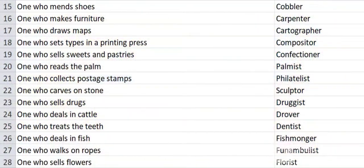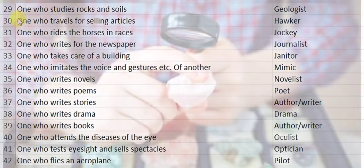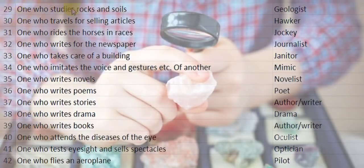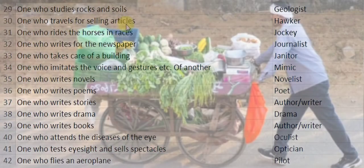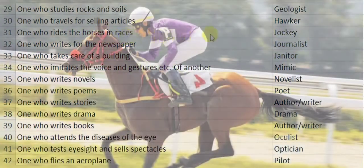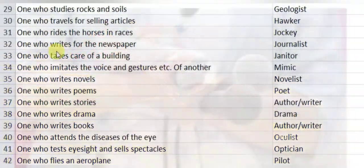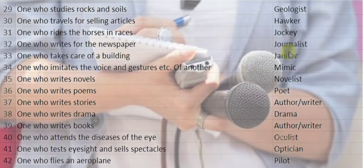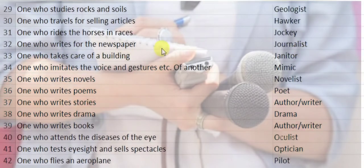One who sells flowers is a florist. One who studies rocks and soils is a geologist. One who travels for selling articles is a hawker. One who rides horses in races is a jockey. One who writes for the newspaper is a journalist.